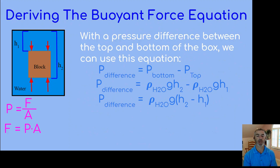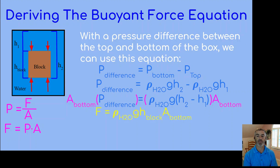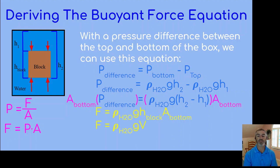We multiply both sides by the area of the bottom of the container. The difference of h2 and h1 is actually the height of the block, so we have the height of the block times the area of the bottom. Area times the pressure difference gives us force. So force equals the density of the water times g times the height of the block times the area of the bottom — and height times area gives us the volume of the block, which is also the volume of the water displaced. This gives us the buoyant force equation: buoyant force equals density times volume of the displaced fluid times g.